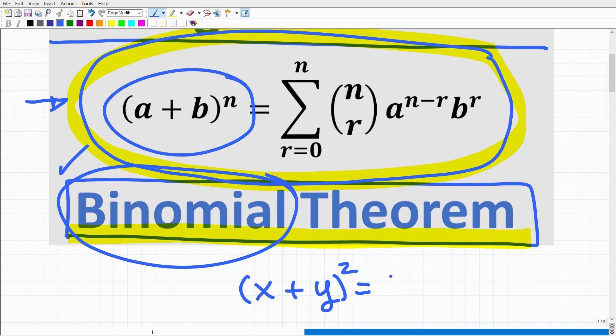To find the answer here, I just take my x plus y and multiply it by itself. So I could use a technique like FOIL or some other multiplication method to find the product of x plus y times x plus y. No big deal.